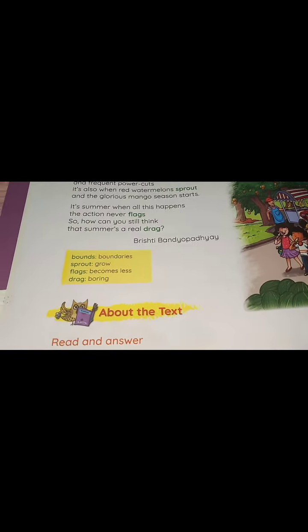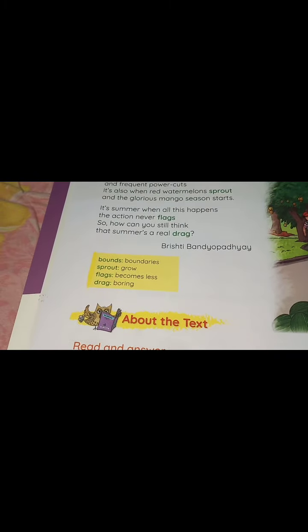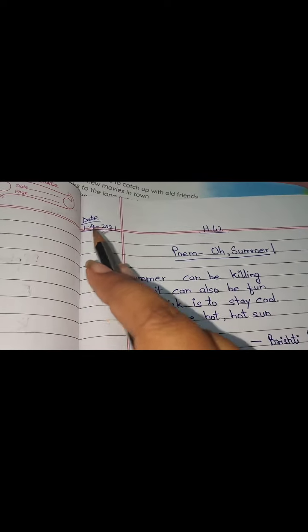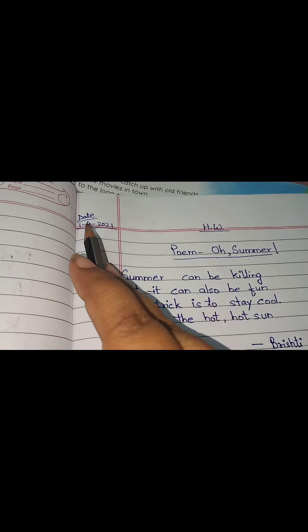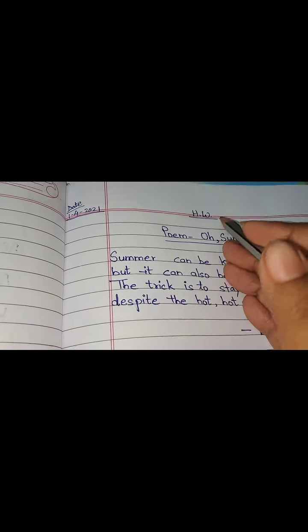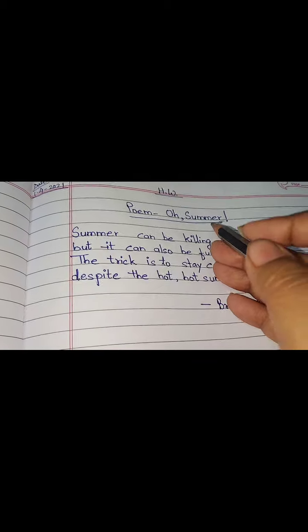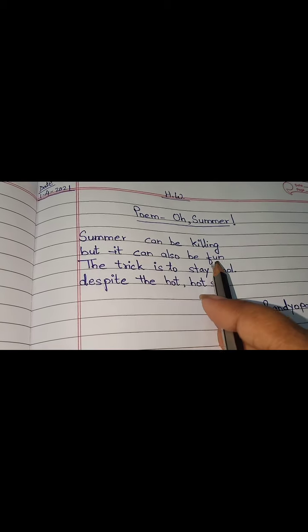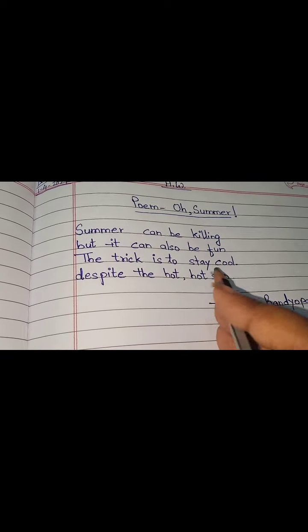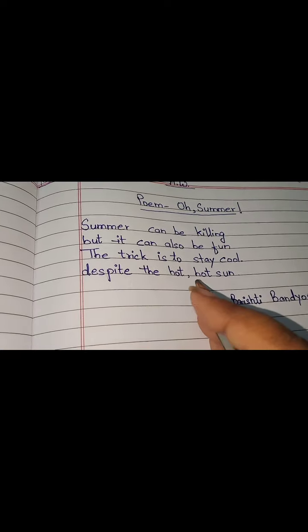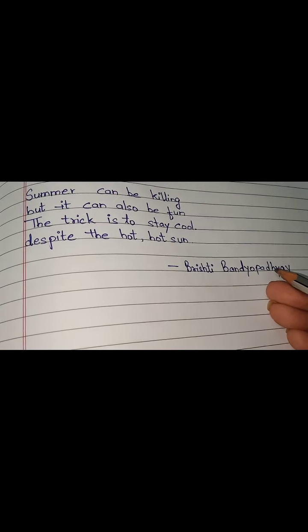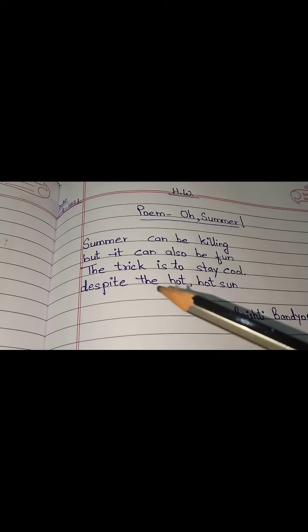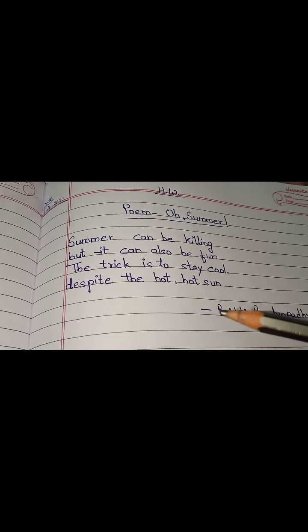Here is your explanation part and your homework, students. Write the first stanza of the poem O Summer. Put the date: 1st April 2021. Your homework — Poem: O Summer: 'Summer can be killing, but it can also be fun. The trick is to stay cool despite the hot, hot sun.' The poem is written by Brishti Bandopadhyay. Do this homework in your English Literature copy.